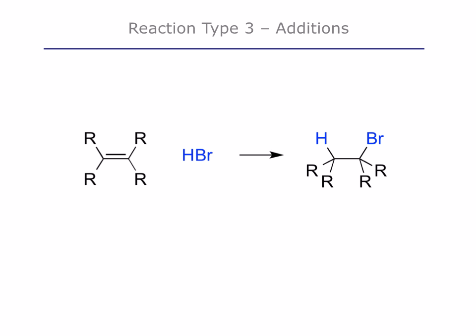The next reaction type is an addition reaction. Typically, we have an organic molecule with a double bond, and we add some reagent, which ends up being added to the molecule. We go from a compound with a double bond to a compound with two new sigma bonds, where the reagent is simply added in. We've gone from two molecules to one molecule.